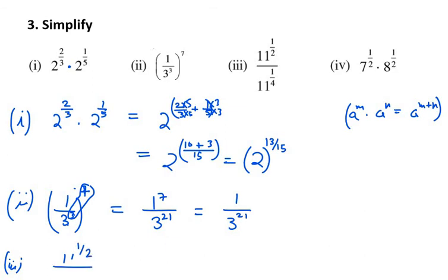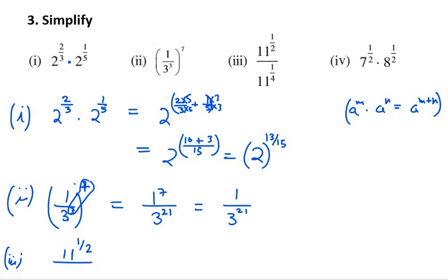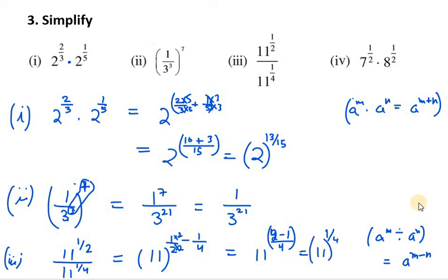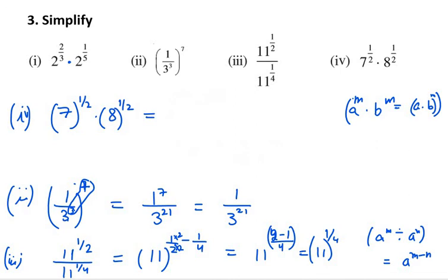The third part is a division problem. We have 11 raised to power half divided by 11 raised to power 1 over 4. Since the base is the same, we use the division law a^m divided by a^n equals a^(m minus n). So we compute half minus 1 over 4. Taking LCM of 4, we get 2 over 4 minus 1 over 4, which is 1 over 4. The answer is 11 raised to the power 1 over 4.